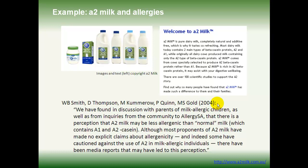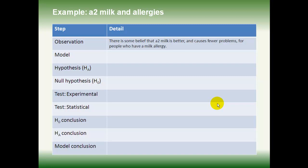Let's start working through the process, beginning with the observation. The observation is fairly simple: there's a belief in some parts of the community that A2 Milk is better and causes fewer problems for people who already have an existing milk allergy. From this, we can construct a model — our explanation for that observation. The most obvious model is that because of the difference in proteins between normal and A2 Milk, A2 Milk is less likely to cause allergic reactions in people who have an allergy to cow milk.